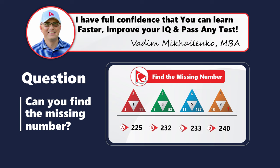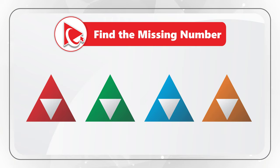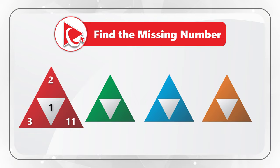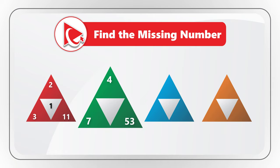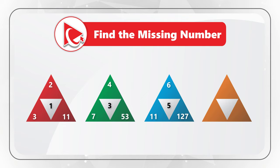Here is the famous four-square-triangle question that you frequently see on the test. You are presented with four triangles. In each triangle, there is a smaller triangle which breaks it down into four parts, each part has a number. In one small triangle the number is missing. The first triangle has numbers 3, 2, 11, and number 1 in the middle. The second triangle has numbers 7, 4, 53, and number 5 in the middle. The third triangle has numbers 11, 6, 127, and number 5 in the middle. The fourth triangle has the missing number, along with numbers 15, 8, and 7.